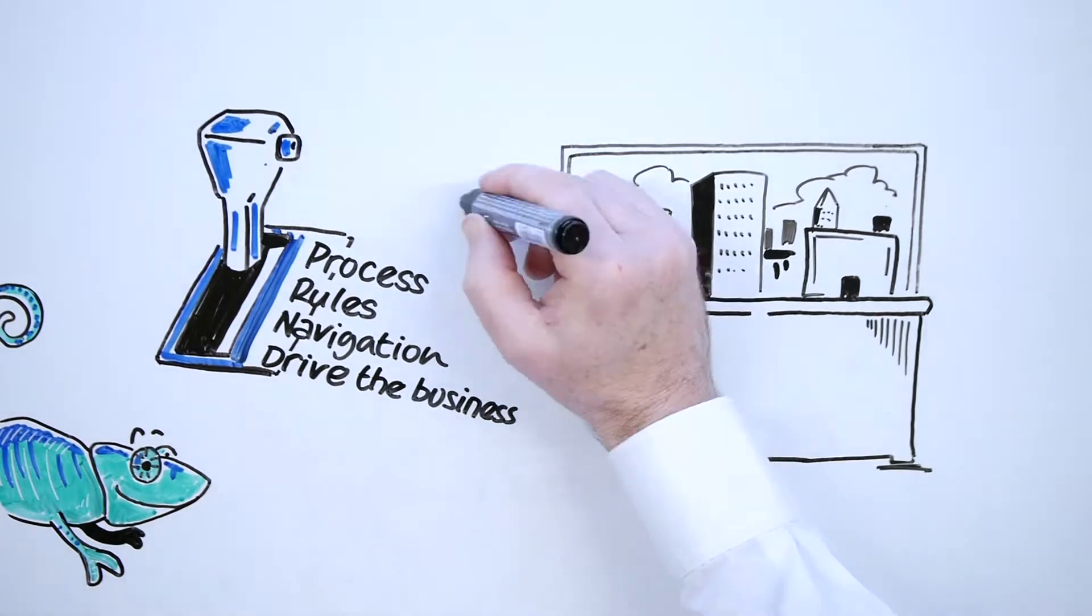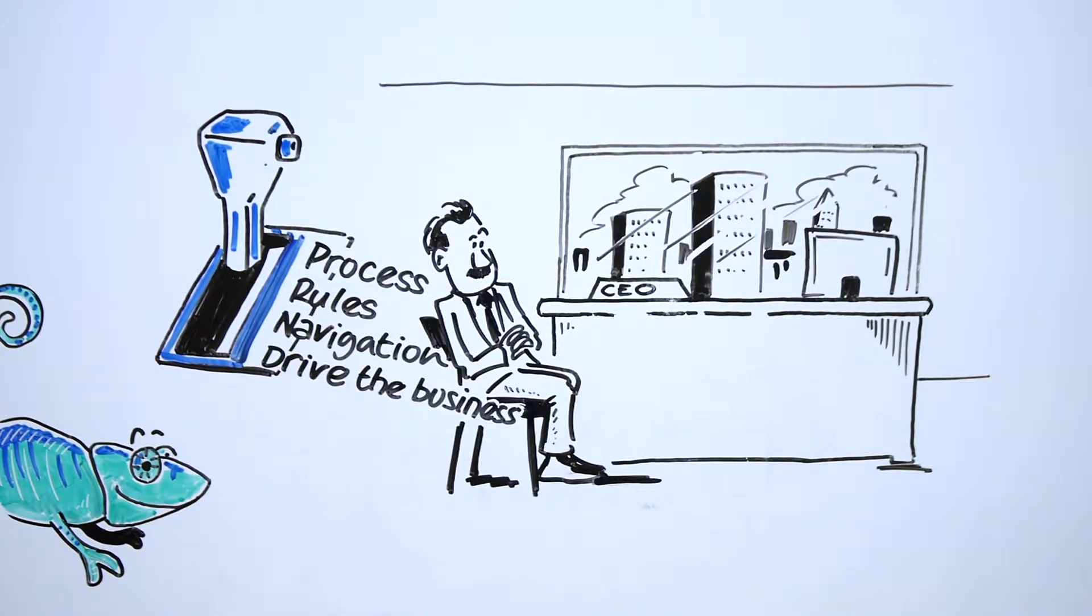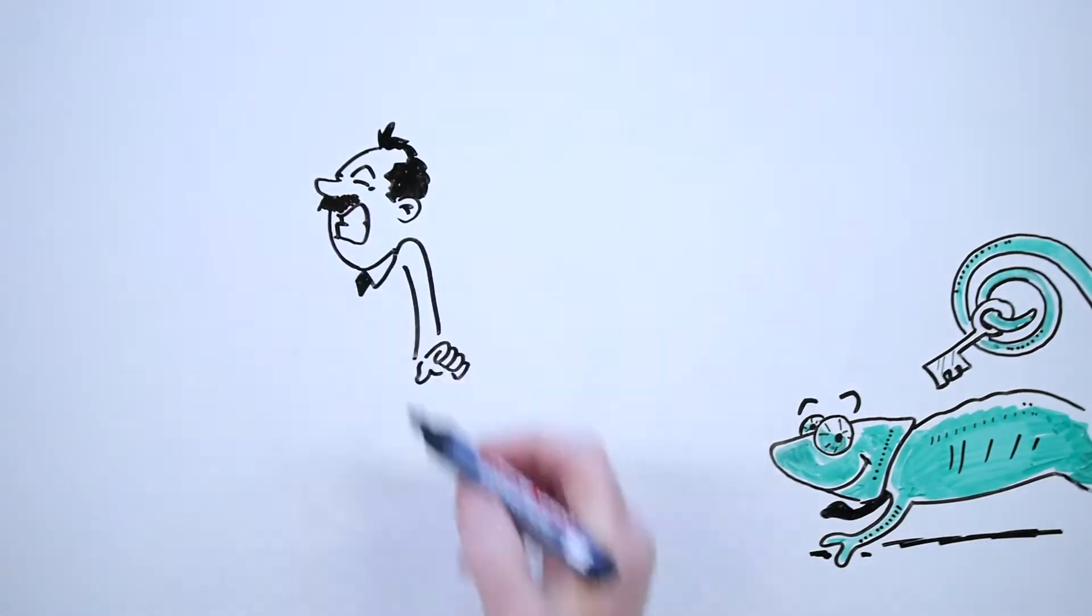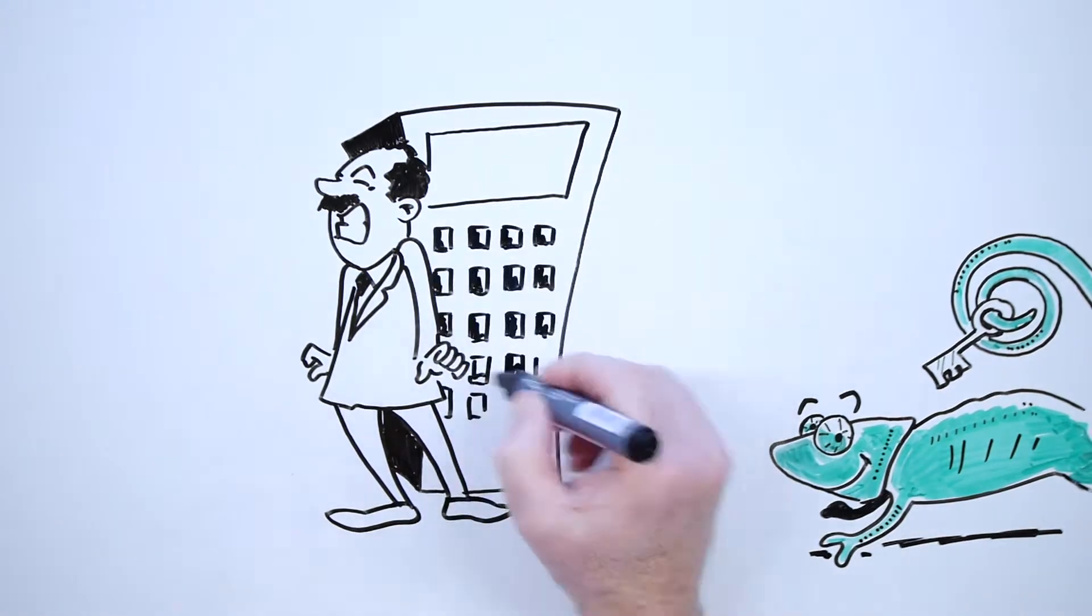As my business grows, I need to build systems and processes that can be automated as much as possible. Systems are rules, policies and procedures that trained employees can repeat as my company grows and runs independent of me.